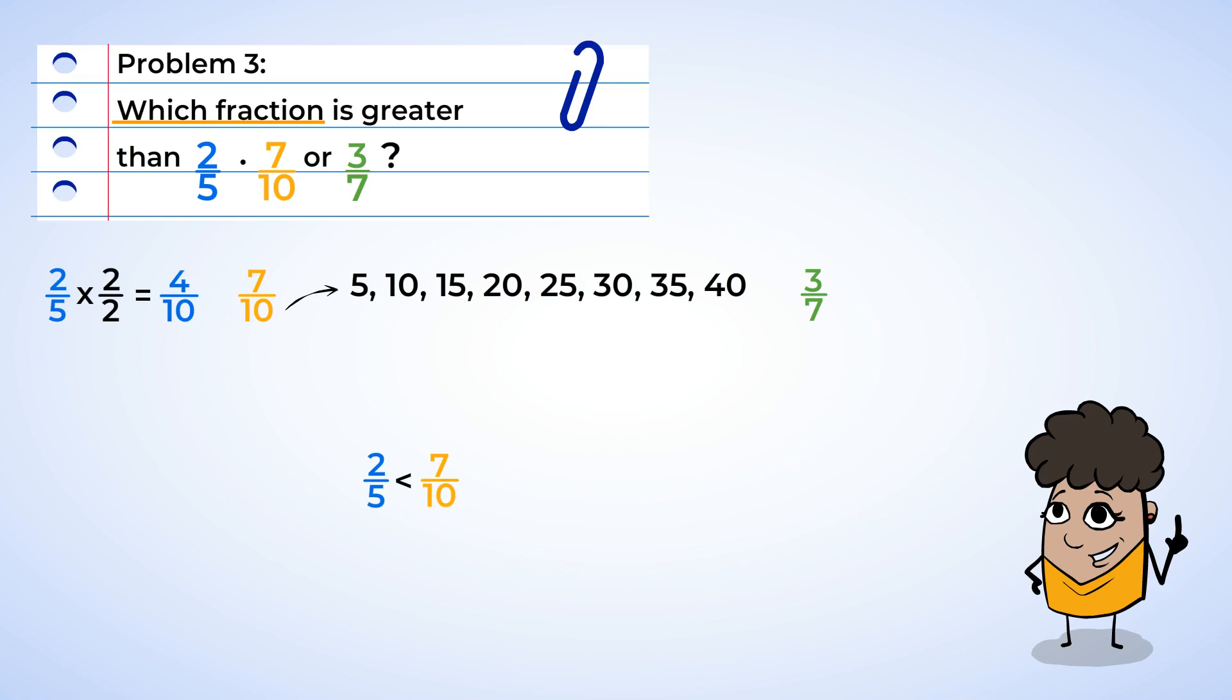Now let's check three-sevenths. We already have the multiples of five listed, so now we need the multiples of seven. Seven, fourteen, twenty-one, twenty-eight, thirty-five, forty-two. Wait, thirty-five is a multiple of five as well. We've found our LCD of thirty-five! Now it's time to find equivalent fractions by multiplying. The numerator and denominator of three-sevenths will need to be multiplied by five, while the numerator and denominator of two-fifths will be multiplied by seven. Three times five is fifteen, fifteen over thirty-five, two times seven, fourteen, fourteen over thirty-five.